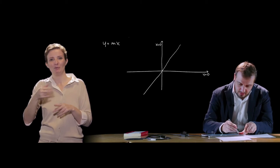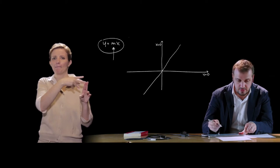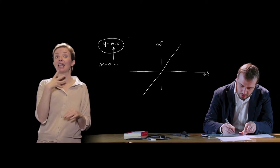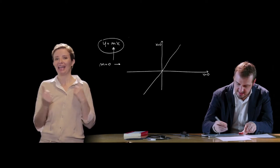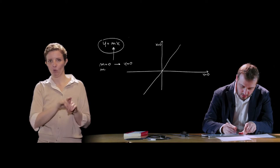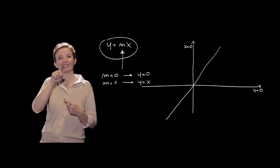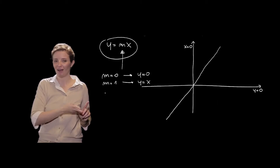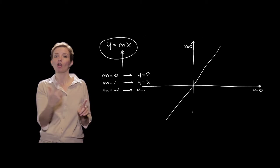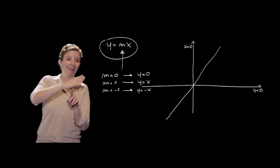L'equazione della retta passante per l'origine è caratterizzata dal parametro m, detto coefficiente angolare. Se m = 0, si ottiene la retta orizzontale y = 0, ovvero l'asse delle x. Se m = 1, si ottiene la retta y = x, ossia la bisettrice del primo e terzo quadrante. Se m = -1, si ottiene y = -x, che corrisponde alla bisettrice del secondo e del quarto quadrante.